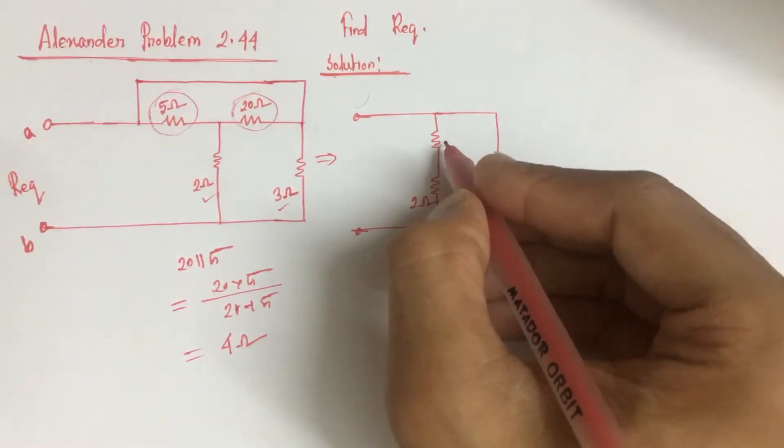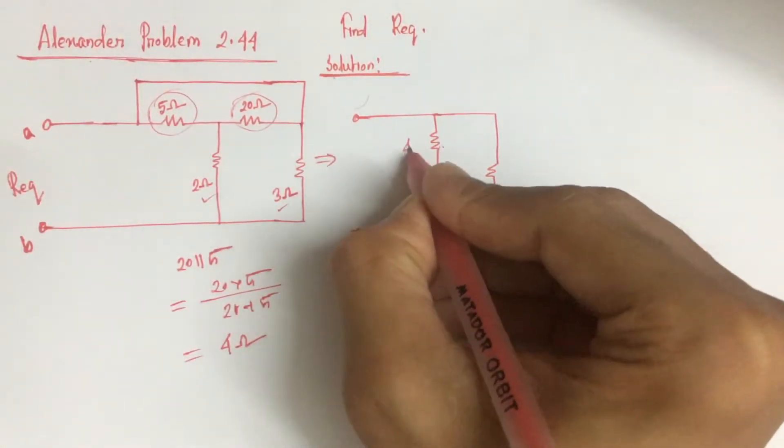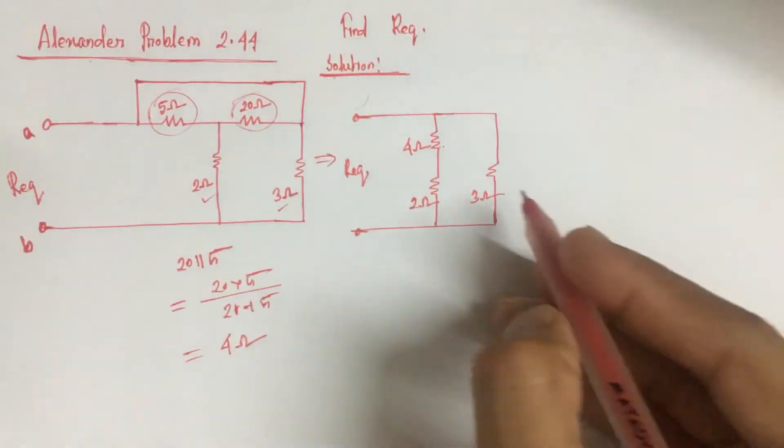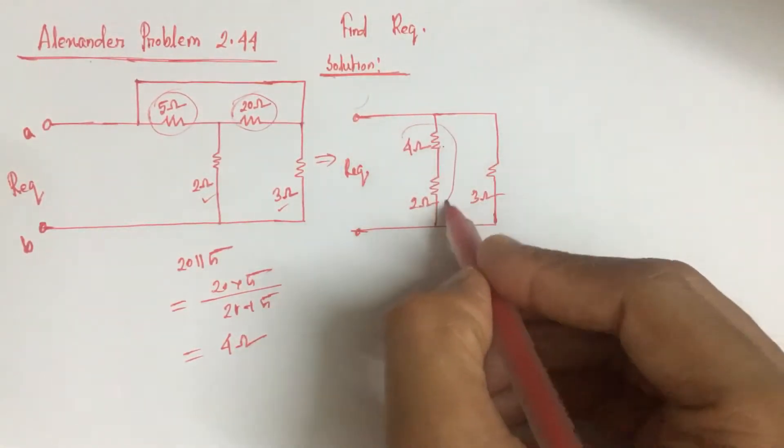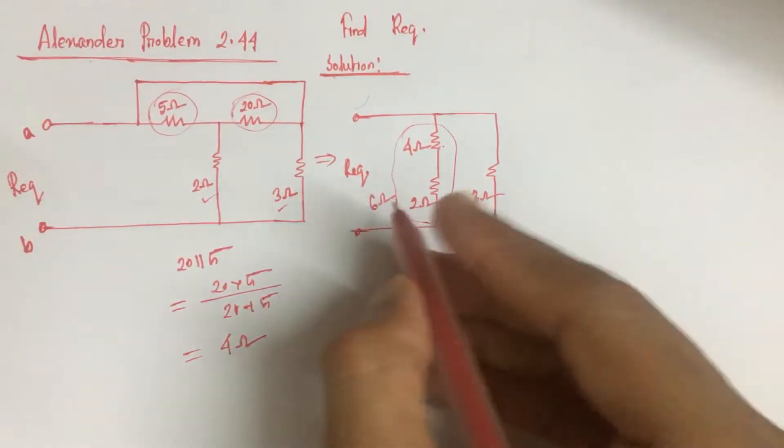And below this resistance is a parallel resistance of 5 and 20, which is 4 ohm equivalent. Now we see that 4 ohm and 2 ohm is in series, which will be added directly, so this is 6 ohm.